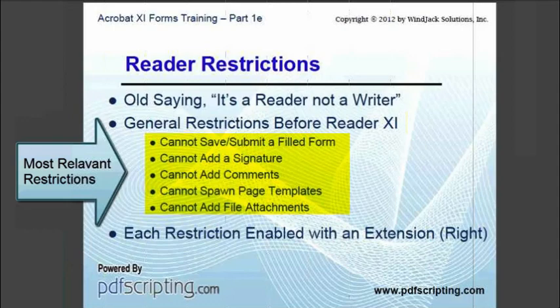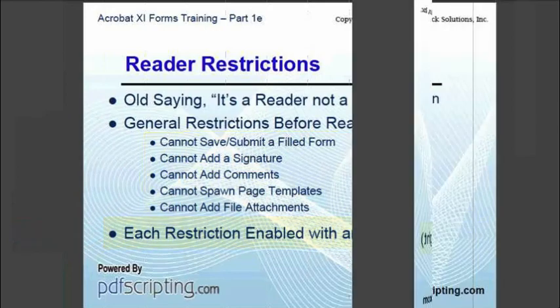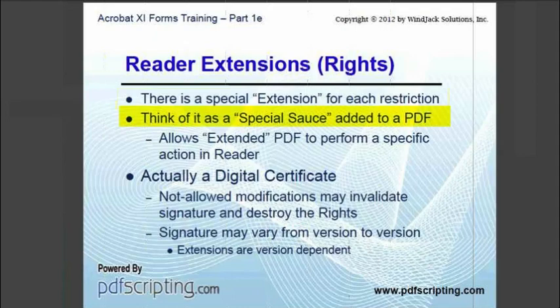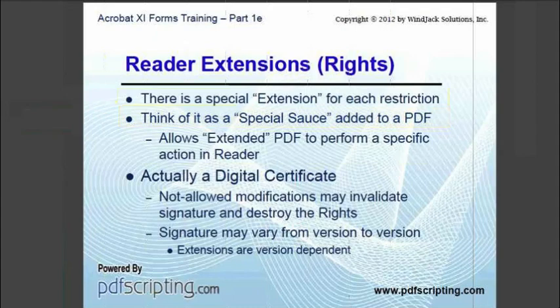It is very important to enumerate these restrictions because each one can be lifted by applying a special extension or write to the PDF. There is a special write for each specific restriction. Think of the write as a special sauce that is put on the PDF. When that PDF is loaded into Reader, the user can now perform that previously restricted action. A write is something applied to — something put into — the PDF. For example, if form save writes are applied to a PDF form, then Reader can save or submit that form after the user has filled it out.